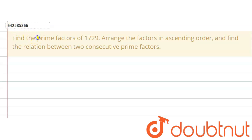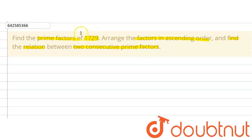The given question says to find the prime factors of 1729, arrange the factors in ascending order and find the relation. We are supposed to find the relation between two consecutive prime factors. This question is asking us to do three things: first, find the prime factors of 1729; second, arrange the factors in ascending order; and third, find the relation between two consecutive prime factors.